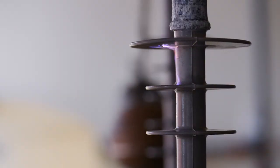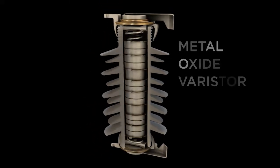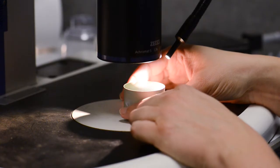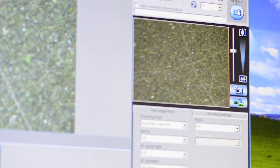The component critical for the arrestor to work is the MOV, the heart of the surge arrestor. The MOV or metal oxide varistor is a disc or block of crystalline semiconductor material made from zinc oxide.